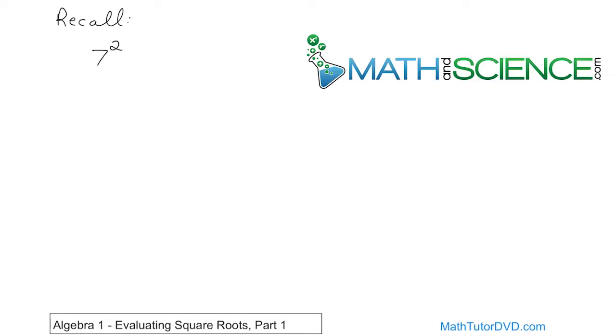What is 7 squared? We talked about the concept of squared. That means 7 times 7. And we all know that that means 49. 7 times 7 is 49.